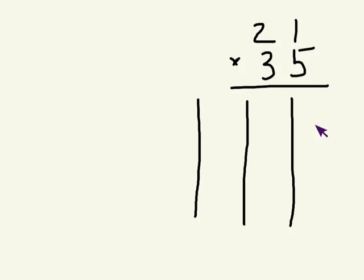So we have 1's, 10's, 100's and 1000's all here. And the first thing we're going to do is we're going to go 5 times 1 and 5 times 20. And we'll put that into our problem.